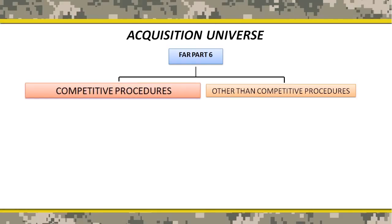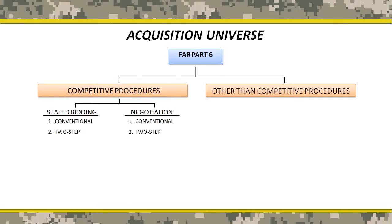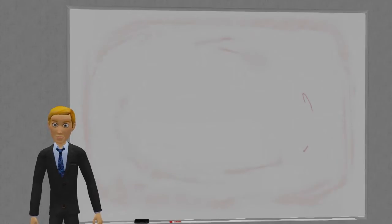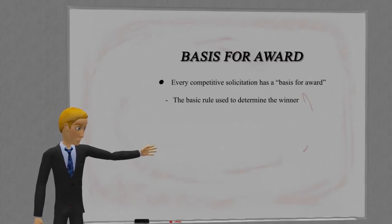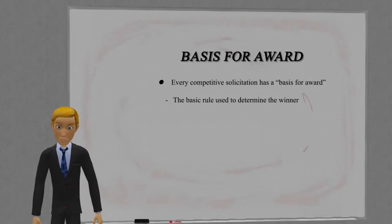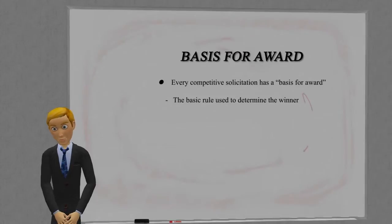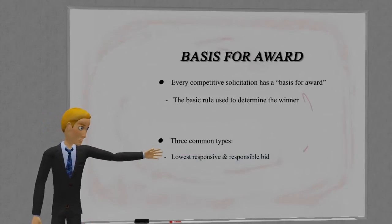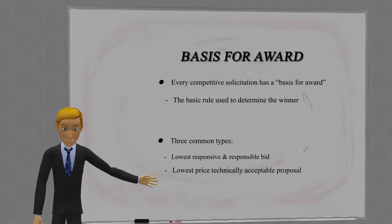Since competitive procedures is, by law, the preferred way for the government to acquire supplies or services, let's concentrate on that side of the landscape. When we talk about source selection, we are talking about an acquisition using competitive procedures. Generally speaking, there are two types of competitive acquisitions: sealed bidding and competitive negotiations. Every acquisition using competitive procedures has a basis for award — the basic rule used to determine the winner. There are three common types: lowest responsive and responsible bid, lowest price technically acceptable proposal, and tradeoff.